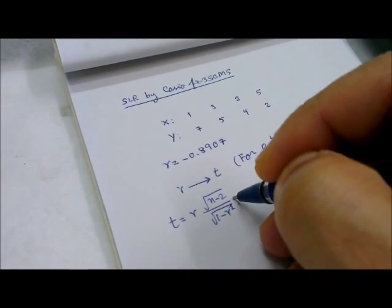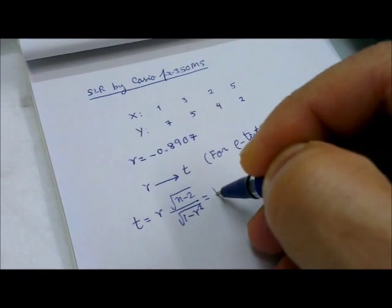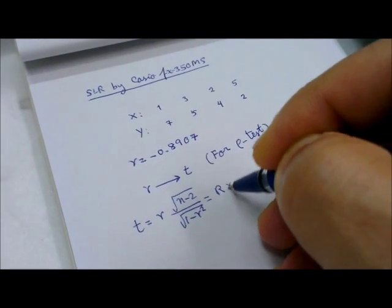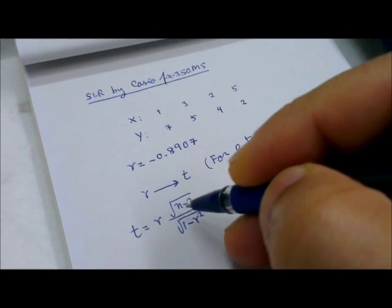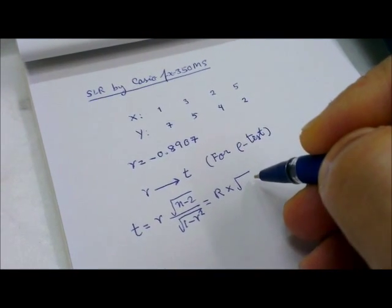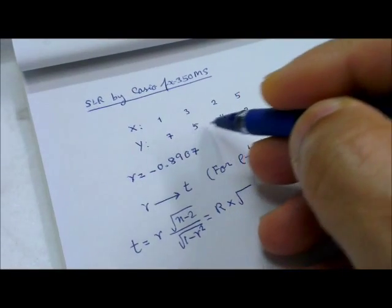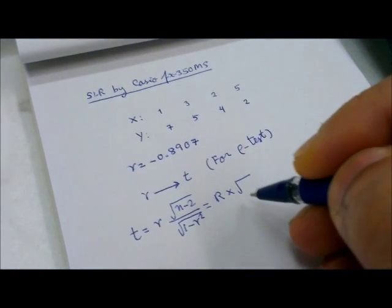In the calculator, you will see R multiplied by root of, for instance, n minus 2. You can write n minus 2, but you can also count. N is 4, 4 pairs, so 4 minus 2 is 2.